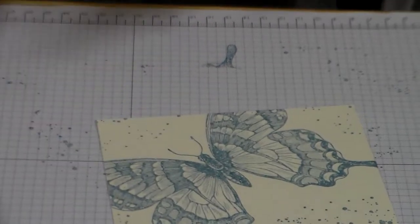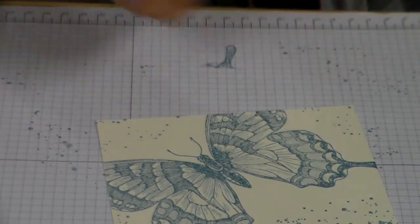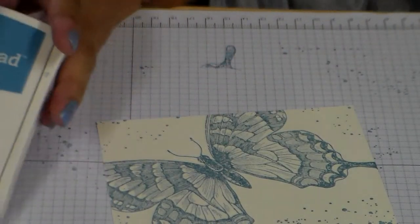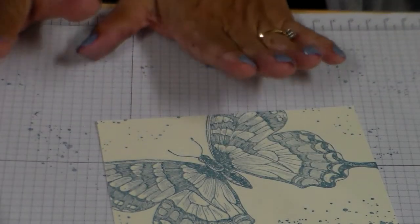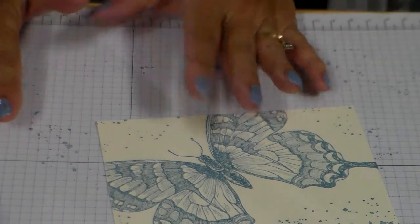See that added little texture there and speckle. I just love what Gorgeous Grunge, how it changes up your project. Marina Mist is the ink as I mentioned earlier. Okay, now for some texture.